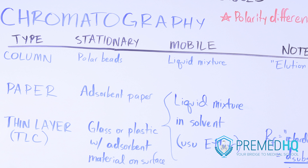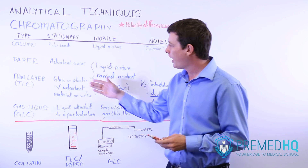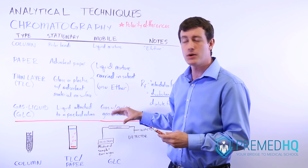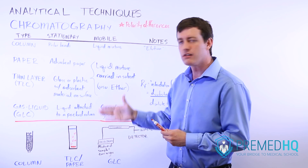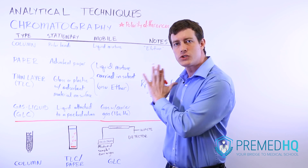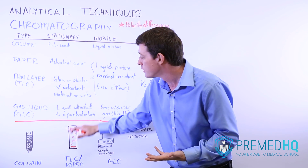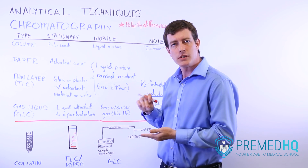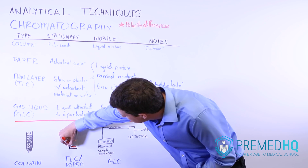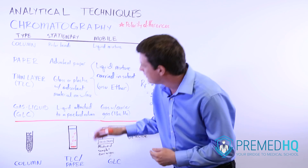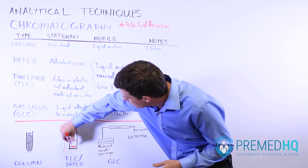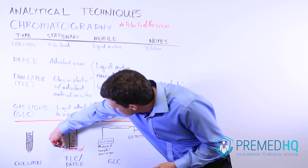Paper and thin layer chromatography are very similar approaches. Paper chromatography uses a strip of paper with a polar adsorbent material incorporated into it. Thin layer chromatography uses a strip of glass or plastic with a polar adsorbent material attached to its surface as the stationary phase. In both cases, you mix your unknown compound and place small dots at a distinct point on the paper or thin layer material, then place it in a beaker containing a solvent, usually an ether.